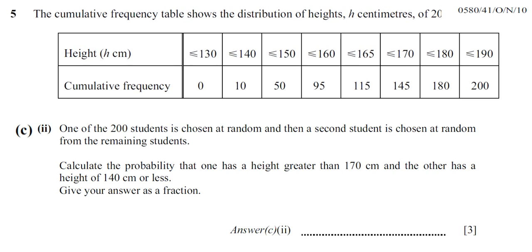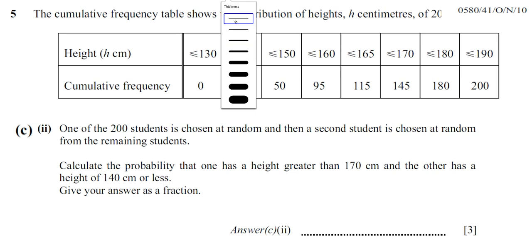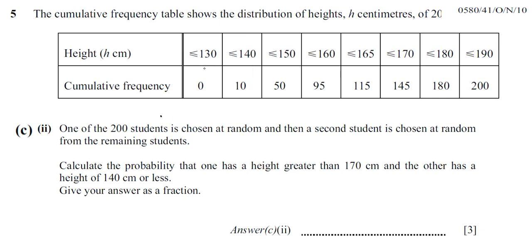We're told that one of 200 students is chosen at random. There's a cumulative frequency table related to these 200 students showing their heights in centimeters. For example, there are no students with height less than or equal to 130 cm, there are 10 students with height less than or equal to 140 cm, and 115 students with height less than or equal to 165 cm, and so on.